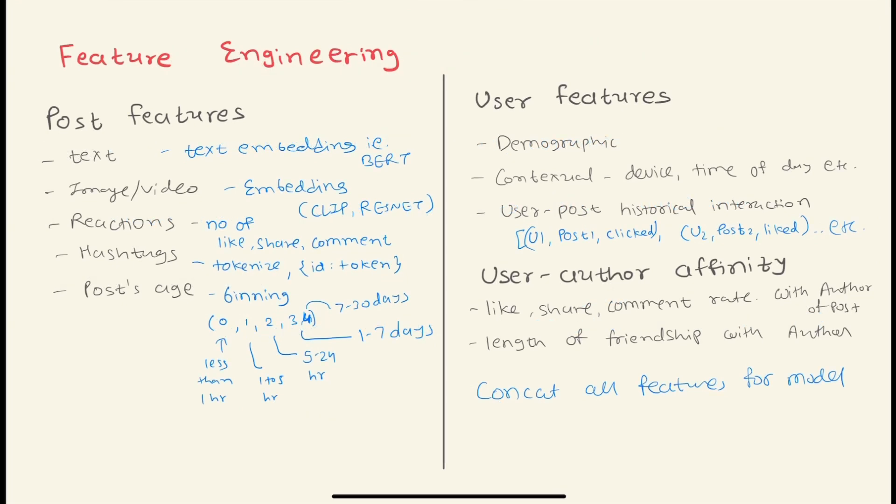Once we get the idea about the data, the next step is to discuss feature engineering. At a high level we can discuss three different features: post features, user features, and user-author affinities. For users, it would be demographic data and then contextual information like what kind of device the user is using, time of day, and then maybe user-post historical interaction like whether user 1 clicked on post 1, whether it was liked, and so on.